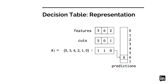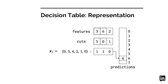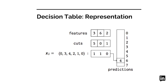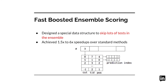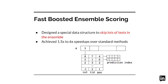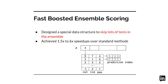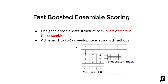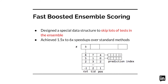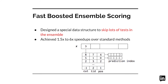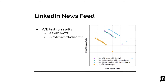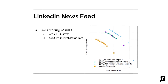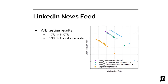We know that decision tables can be efficiently represented using bitwise operations, which makes it highly cache-friendly. For boosted decision tables, we also designed a special data structure that can potentially allow us to skip a lot of tests in the ensemble. In the end, we achieved significant speed-ups over the standard methods. Finally, we deployed our model to LinkedIn's news feed system and achieved significant lift in key metrics through our A/B testing framework.